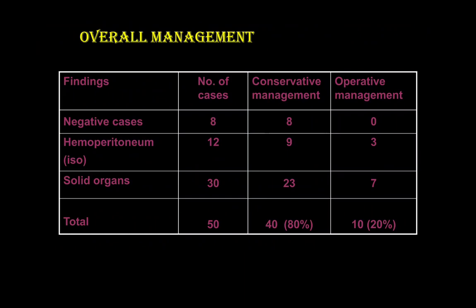Overall management summary: 8 negative cases were all managed conservatively. Isolated hemoperitoneum seen in 12 cases — 9 managed conservatively, 3 operatively. Solid organ injuries in 30 cases — 23 managed conservatively, 7 operatively. In total, out of 50 cases, 80% were managed conservatively and around 10 cases, 20%, were managed operatively.